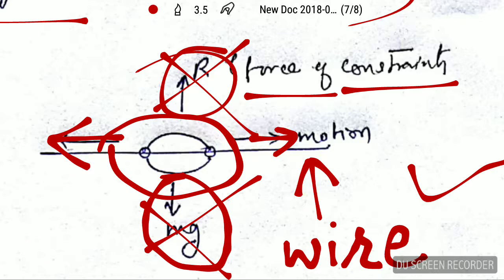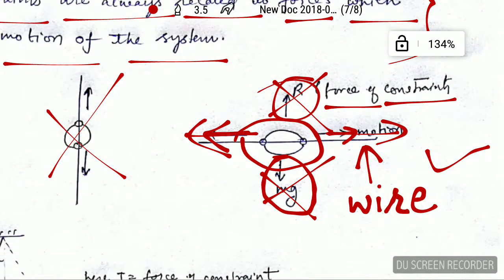Here it explains how the forces of constraints work and restrict the motion of the bead in some particular way. Now we will take another example, the simple pendulum.